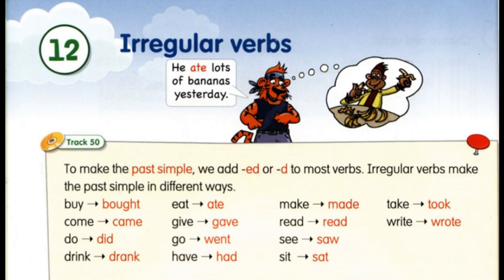Якщо у теперішньому часі у нас buy – купувати, то у минулому воно змінюється на bought. Buy – bought. Купувати – купив. Come – приходити, змінюється на came – приходив. Do – робити, did – робив. Drink – пити, drank – пив. Eat – їсти, ate – їв. Give – давати, gave – давав. Go – іти, їхати, went – йшов, їхав. Have – мати, had – мав. Make – виготовляти, made – виготовляв. Read – читати, read – читав.